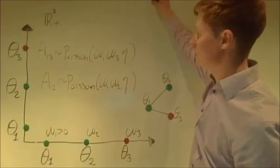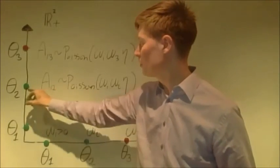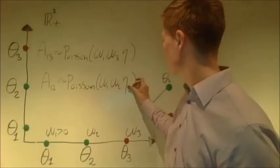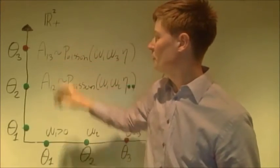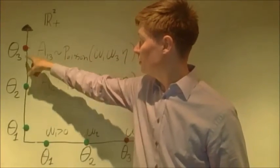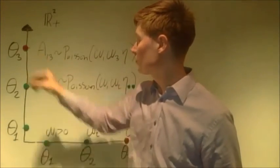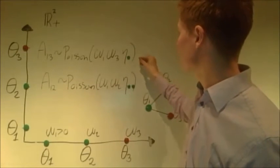So for instance, in the case of theta1, 2, they are both green, so that would be eta green, green. But in the case of theta1, 3, theta1 is green, and theta3 is red, so that would be eta green, red.